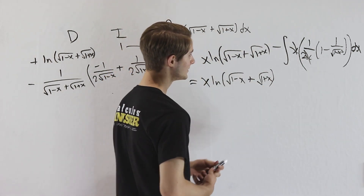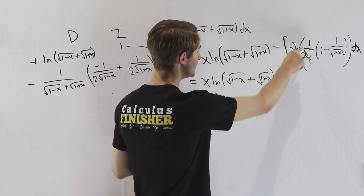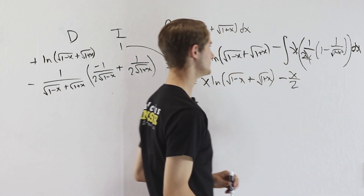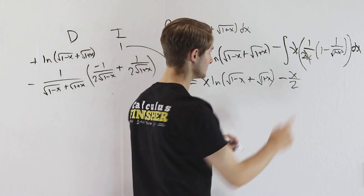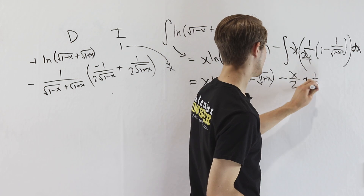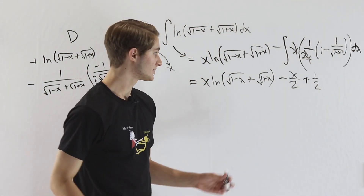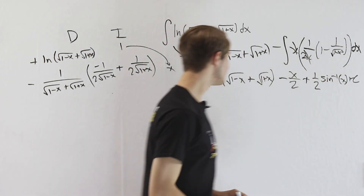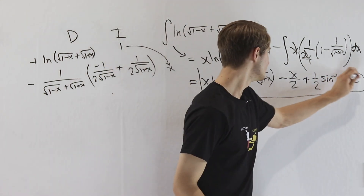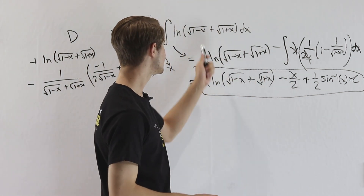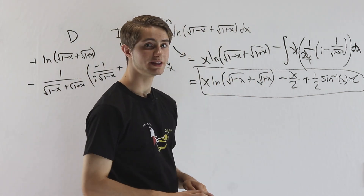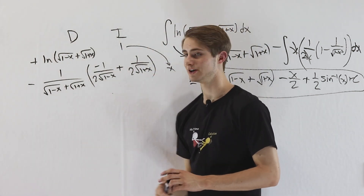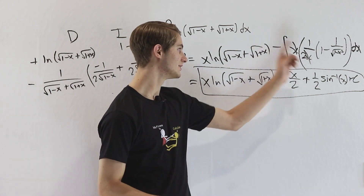So the final result is: x times the natural log of the square root of 1 minus x plus the square root of 1 plus x, then minus one-half times the integral of 1, which is just x over 2. Then minus another minus becomes a plus, and one-half times the integral of 1 over the square root of 1 minus x squared is the inverse sine of x. And that is our final result. All it took was integration by parts to eliminate the natural log, followed by a careful amount of algebra to simplify everything down.